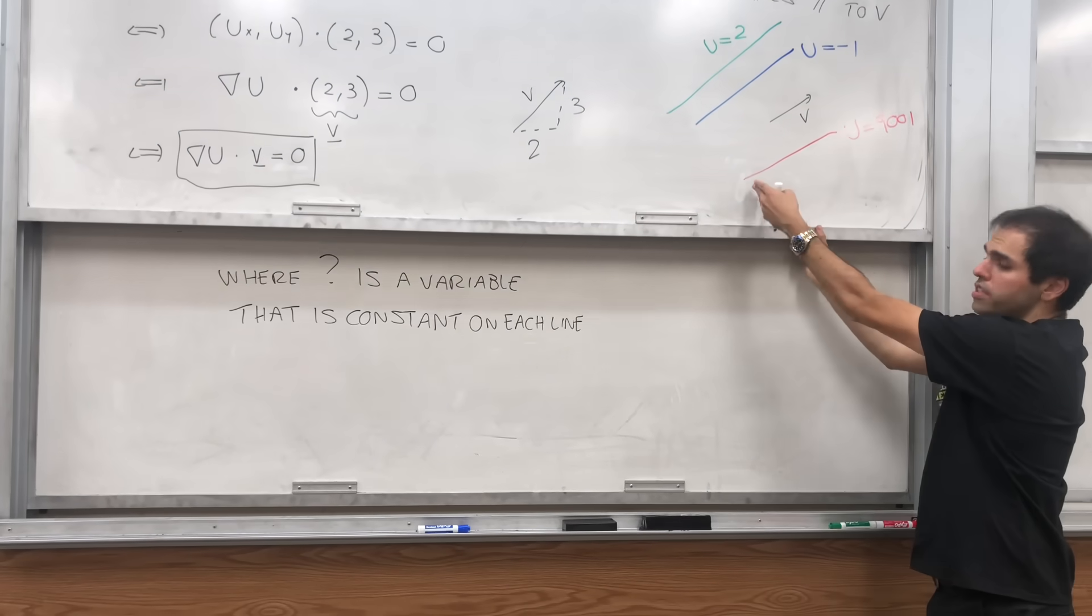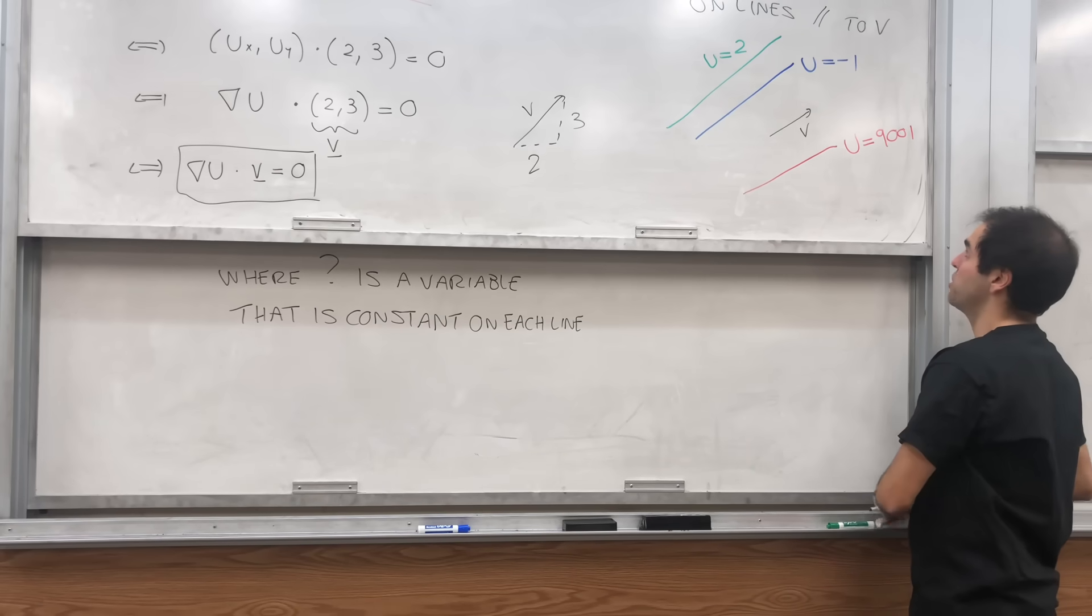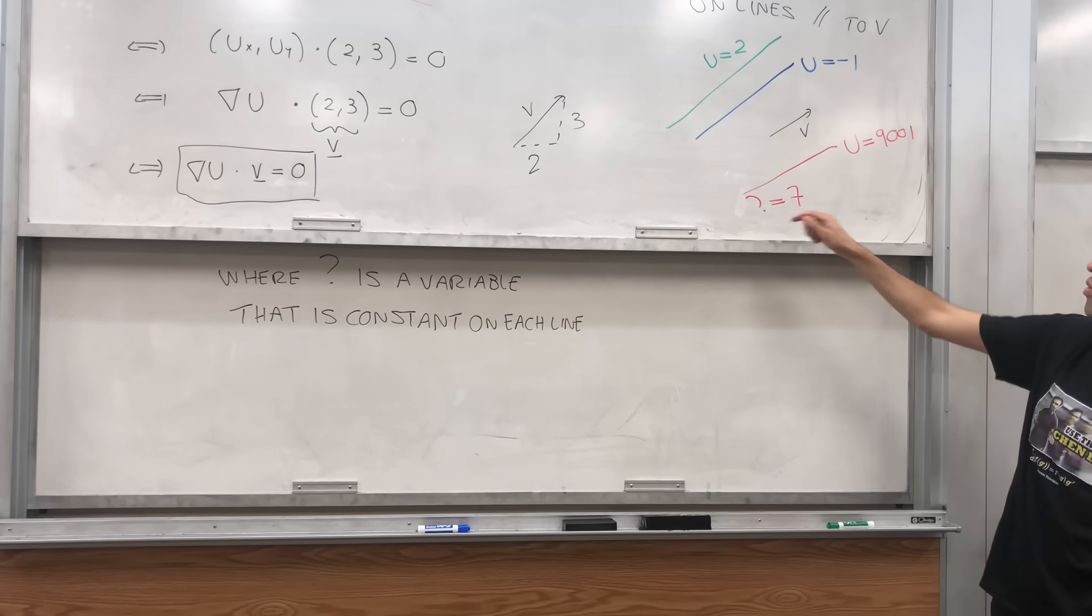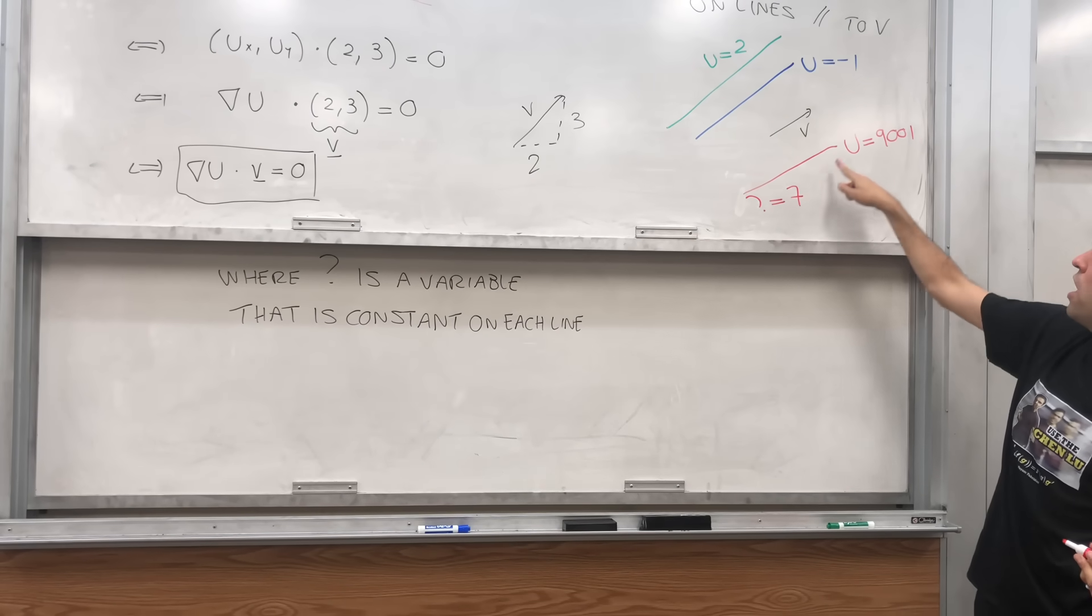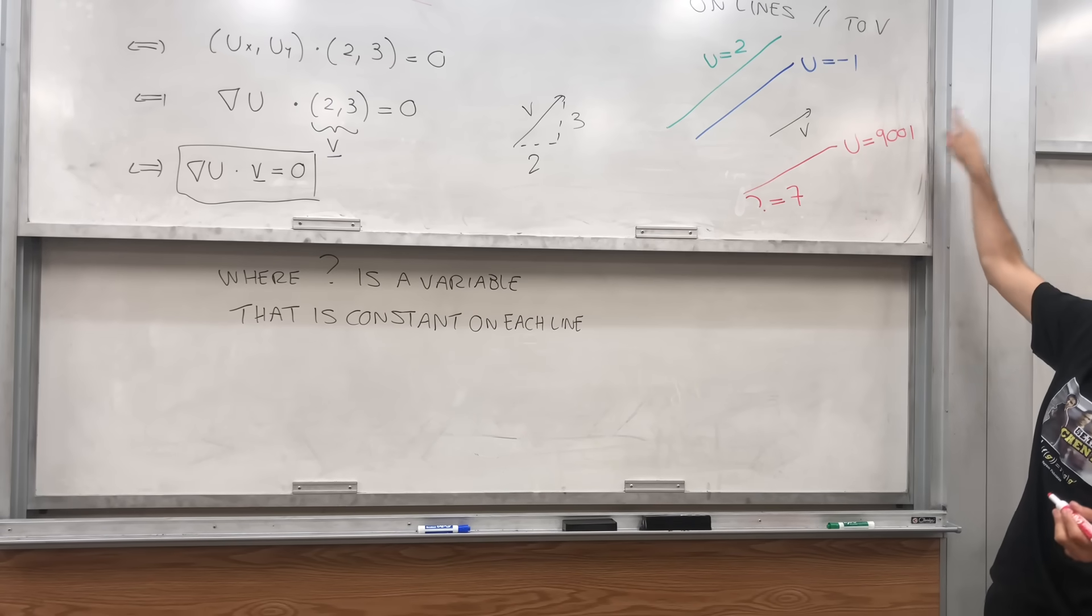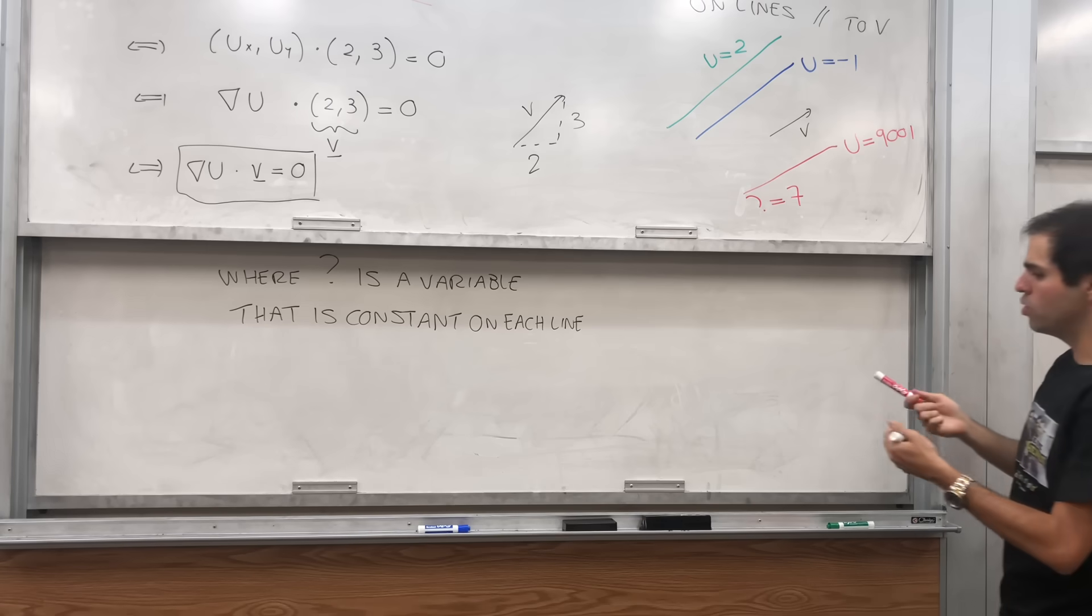For instance, this line maybe might be question mark equals 7. So when we say question mark equals 7, then we can just specify f of 7 to be 9,001, and that would be a solution.